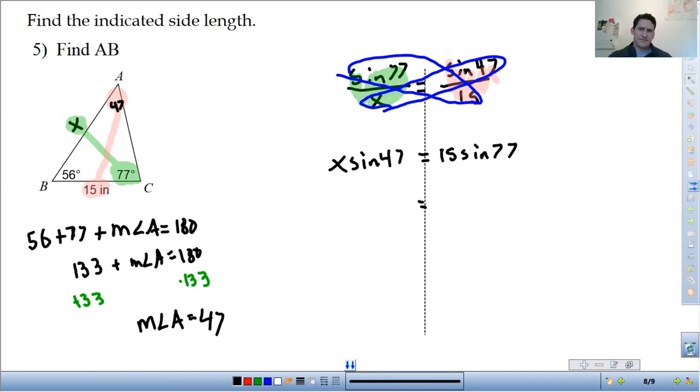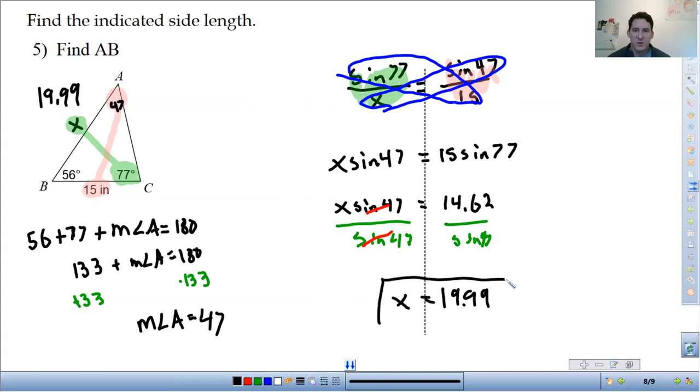And then last step, just divide both sides by the sine of 47. So this cancels out. You get X is equal to 14.62 divided by sine of 47 equals 19.90. So there we go. 19.99. And that will do it for today.